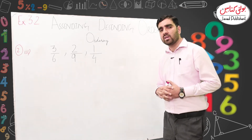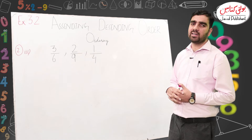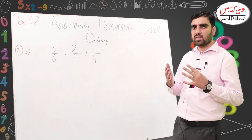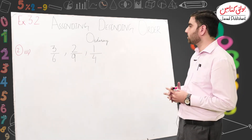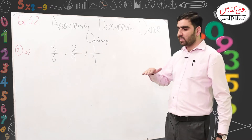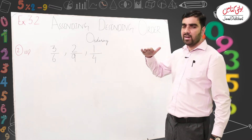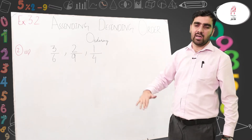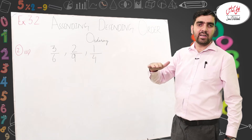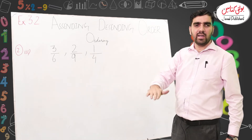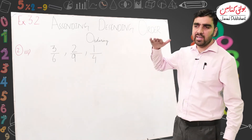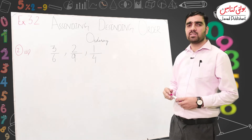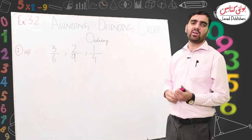I will let you know what ascending and descending order are. In descending order, we move from large values to small values — like 10, 9, 8, 7, 6, 5. This is our descending order.